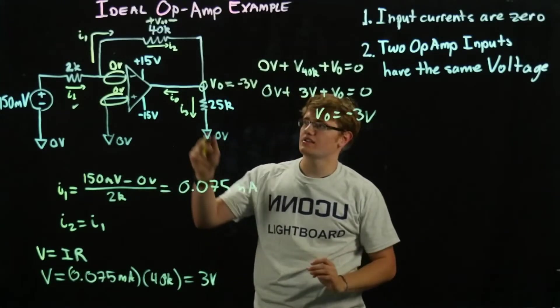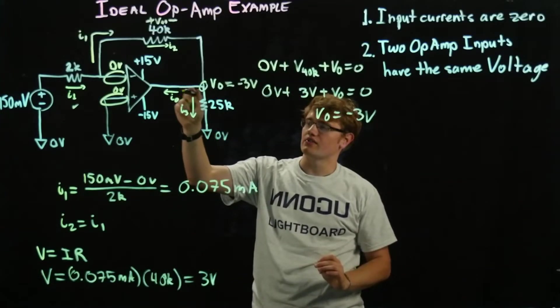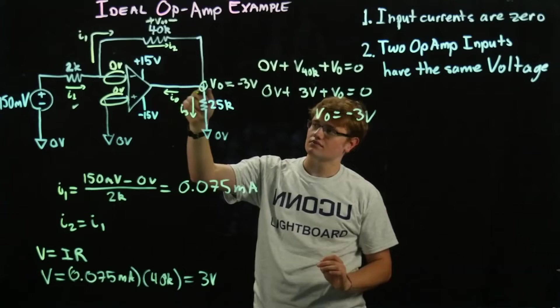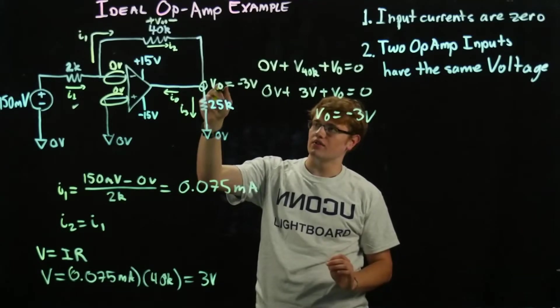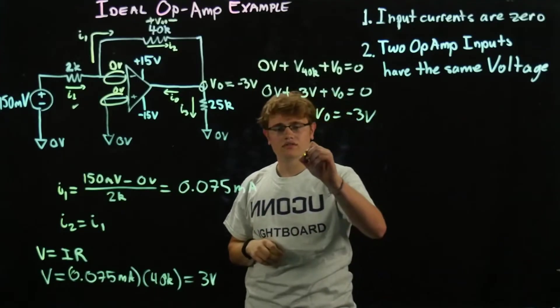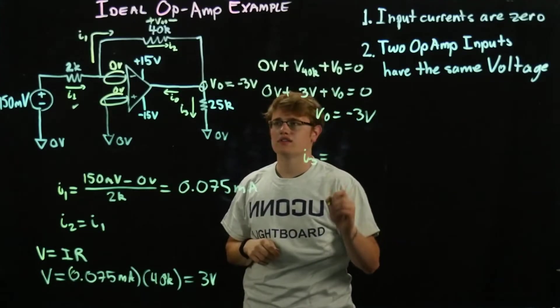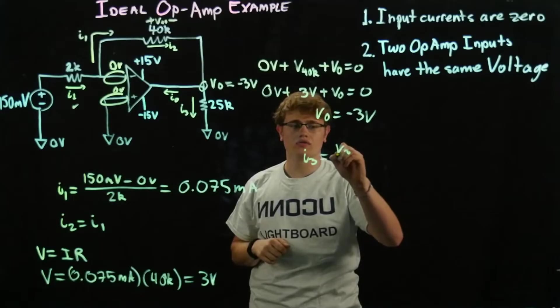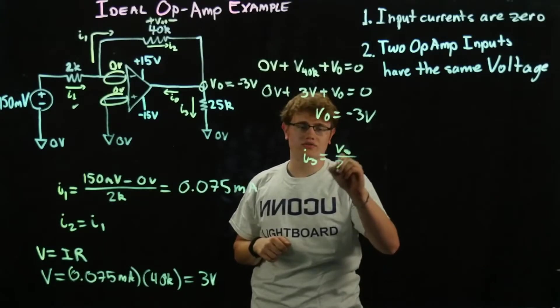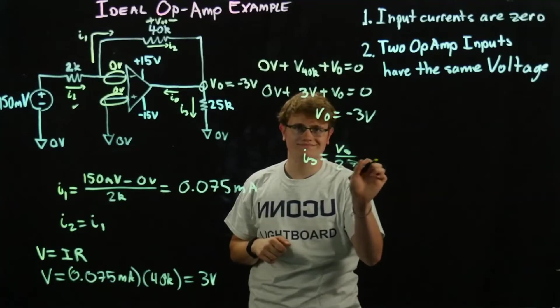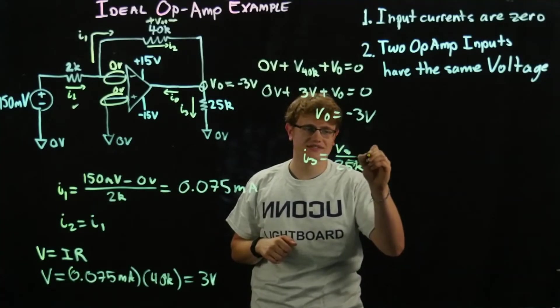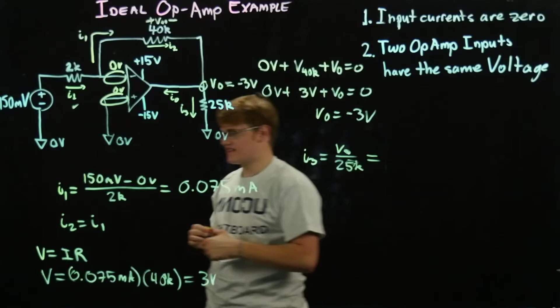Now what is this current right over here, the current going right over here? In order to find that, we need to find I3. We know the voltage right over here, so I3 equals VO over that 25k resistor. Now what does that equal for us?